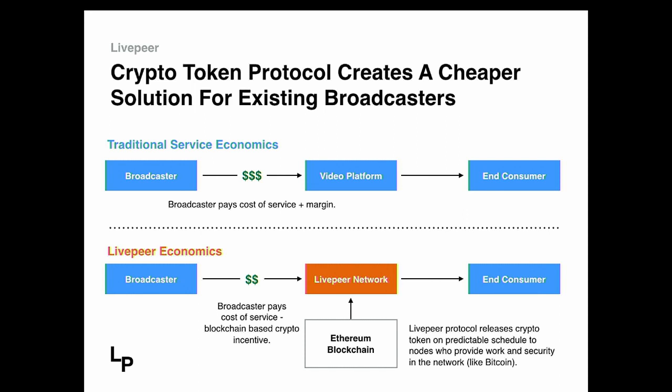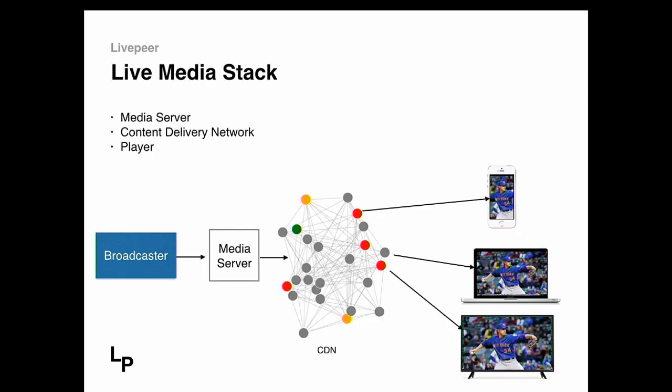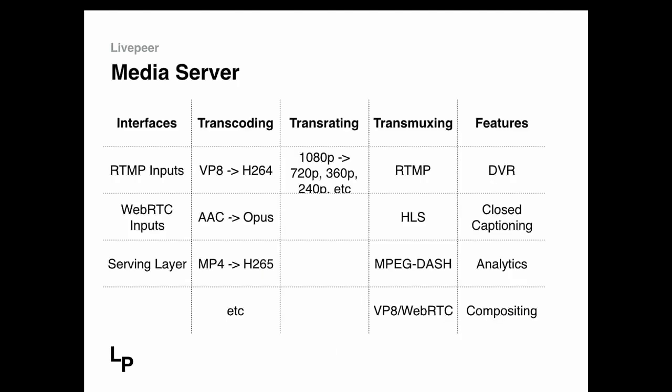Even existing broadcasters can benefit from a decentralized network through the economic opportunity. So you have an incentive to join the network and run nodes through the crypto token protocol. But how do we decentralize this? This is a look at the centralized live media stack: a broadcaster sends video to a media server, that goes to a CDN to distribute it, then to a player on TVs, smartphones, laptops. We need to decentralize this — take the media server and have it running on all of the nodes that join the Livepeer network, and those nodes form a content delivery network to serve video to millions of viewers.